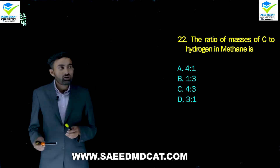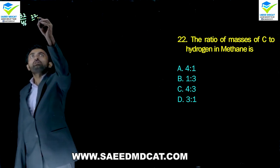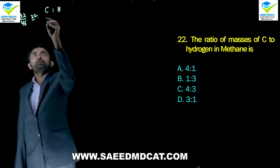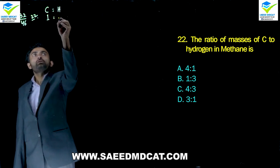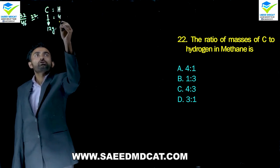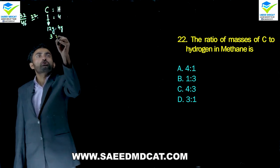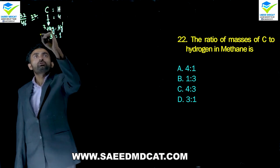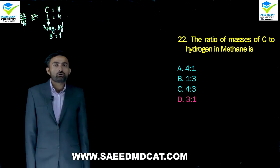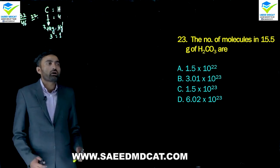Question 22: Ratio of masses of carbon to hydrogen in methane (CH4). One carbon: mass = 12 g. Four hydrogens: mass = 4 g. Ratio = 12:4 = 3:1. Delta option is correct.